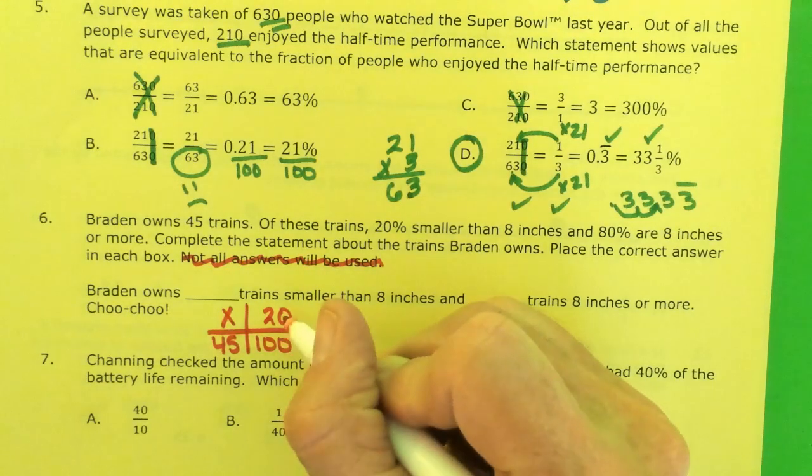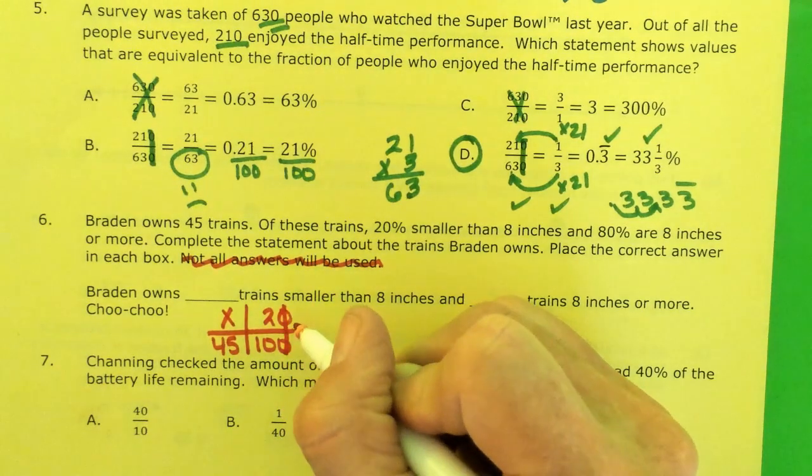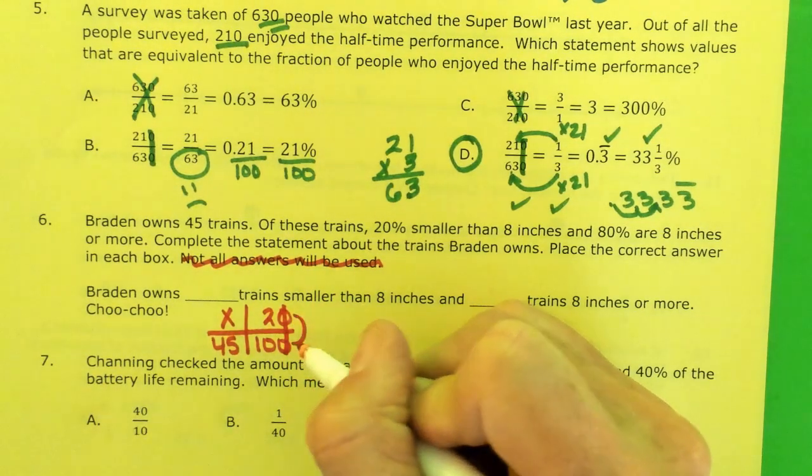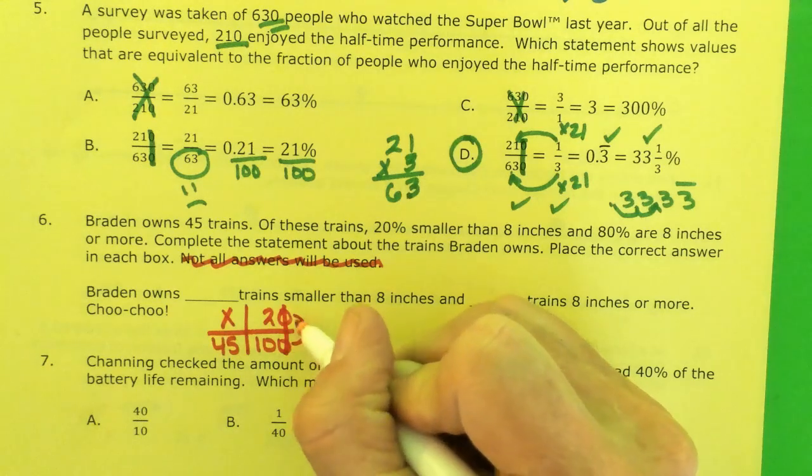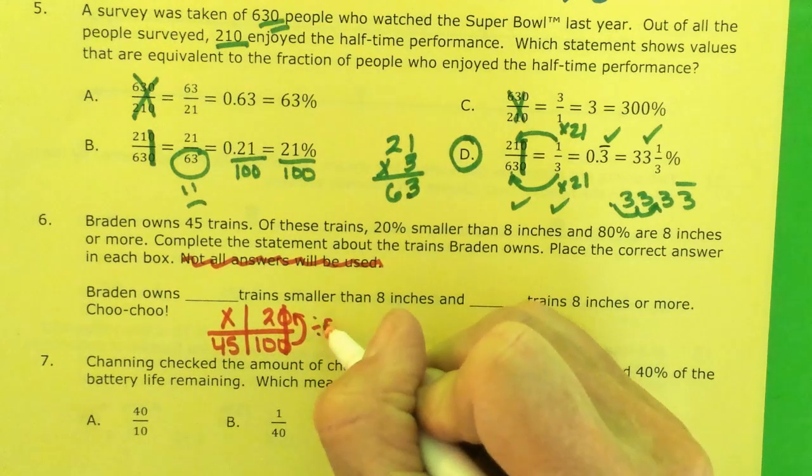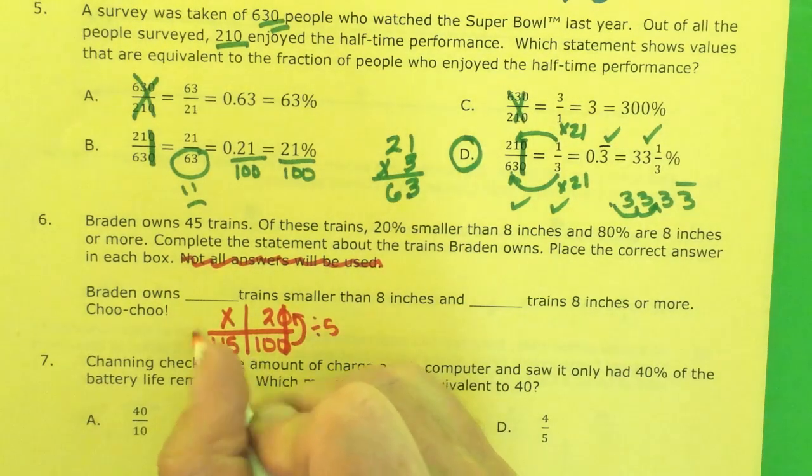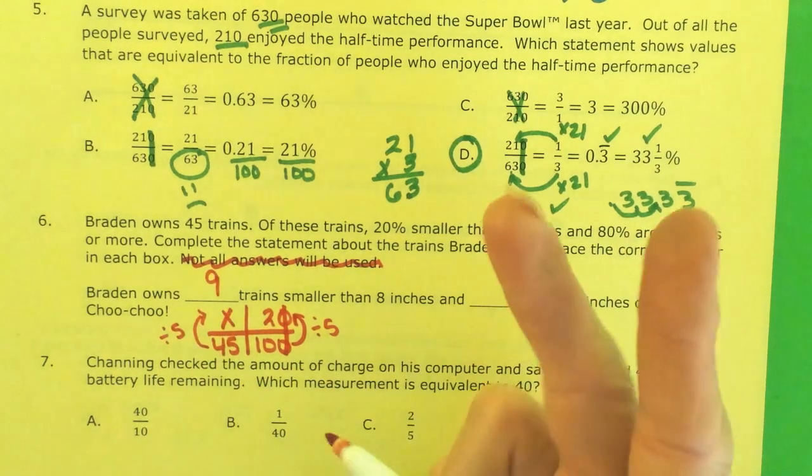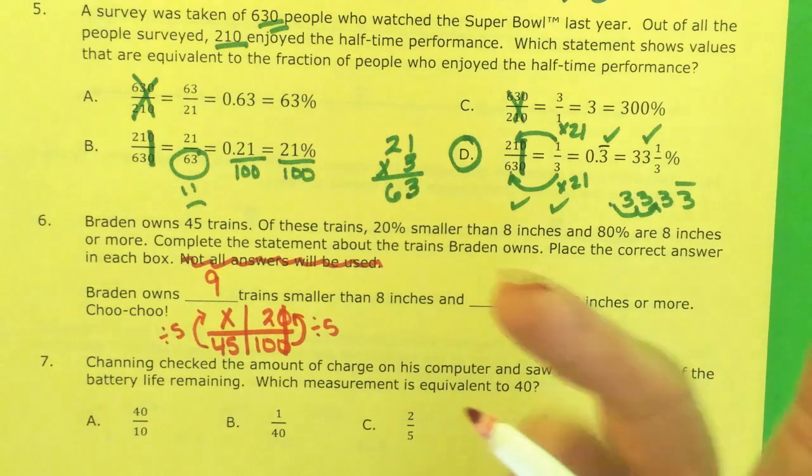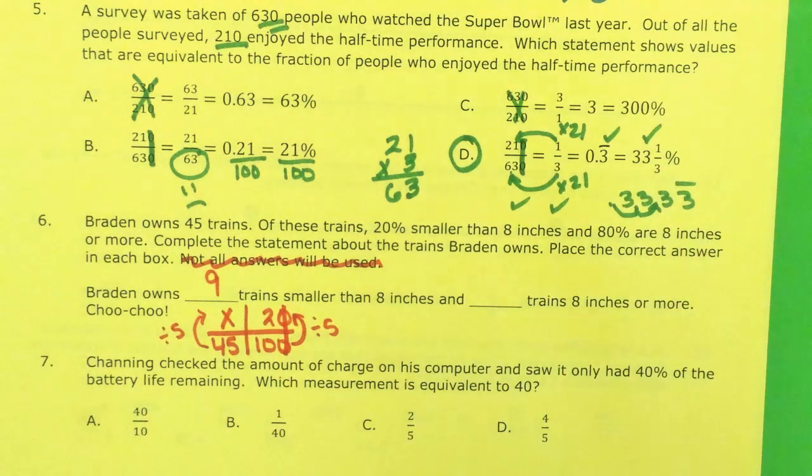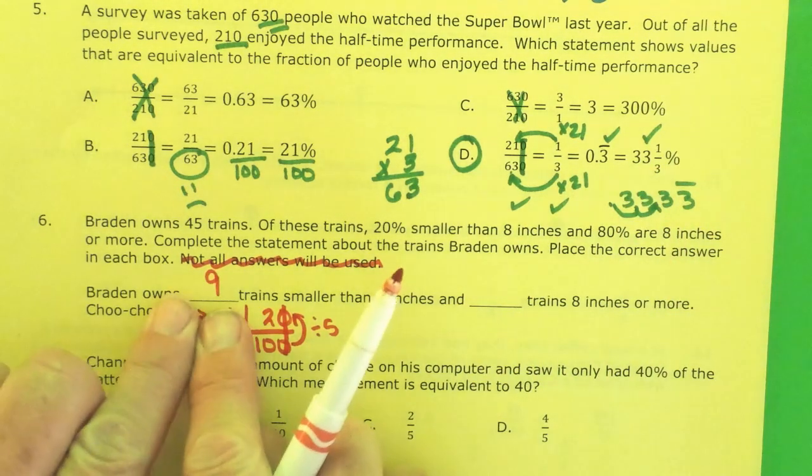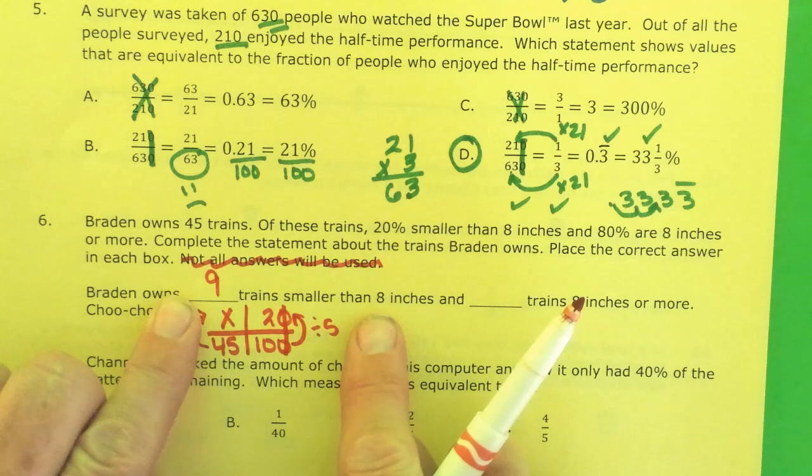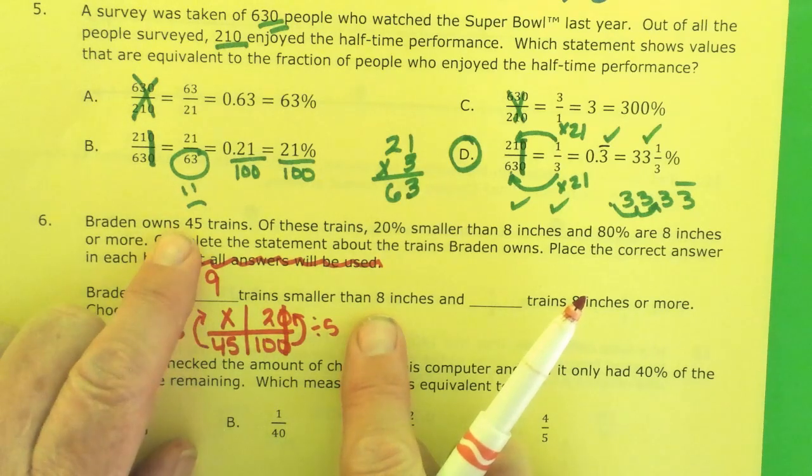I can take out the zeros, and I see 2 times 5 is 10, so 10 divided by 5 is 2. What's 45 divided by 5? That equals 9. 5, 10, 15, 20, 25, 30, 35, 40, 45. Yep, it equals 9. So I know 9 of his trains are smaller than 8 inches, and he's got 45 trains total.